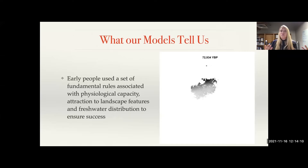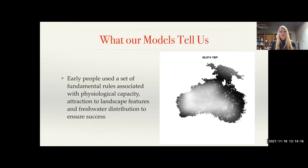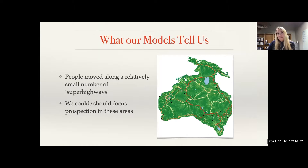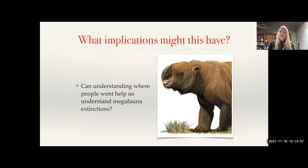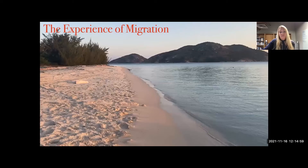Early people used a set of fundamental rules associated with physiological capacity, attraction to landscape features, and freshwater distribution. The team is working to understand connectivity as we move out of the last glacial maximum and into the Holocene. There may be implications regarding megafauna: we know they went extinct pretty quickly after the arrival of Aboriginal people, and perhaps the stigmergic effects of these pathways and rapid movement helped facilitate hunting of animals that were also experiencing climatic changes.